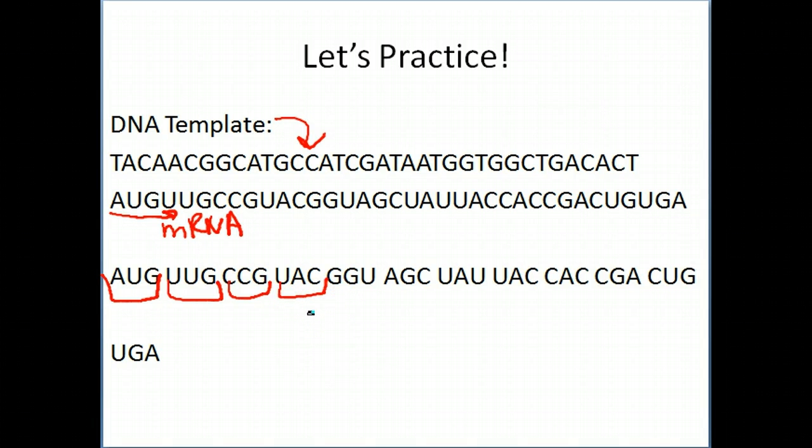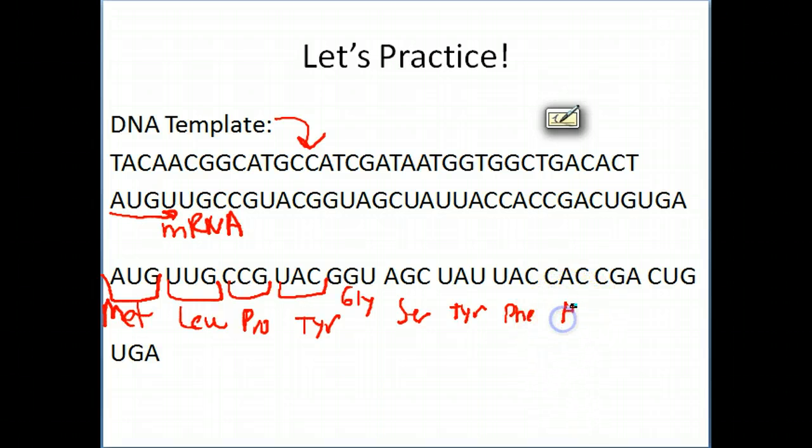So what did we get here? Let me give you the answers here. This is methionine. This is leucine. I'm putting just the abbreviations here. This is proline. This is tyrosine. This is glycine. This is glycine. Serine. Tyrosine again. Phenylalanine. Phenylalanine. Histidine. Arginine. Leucine. And stop. So you don't add an amino acid there.